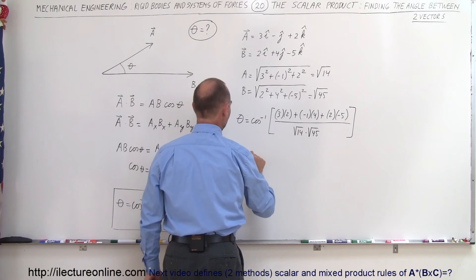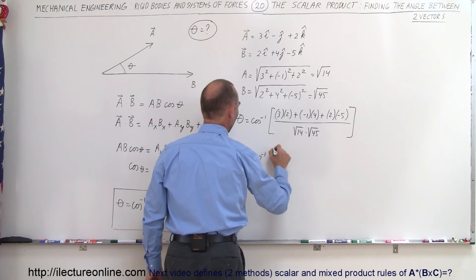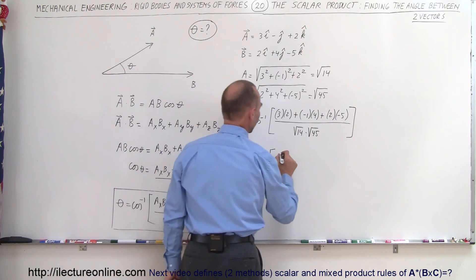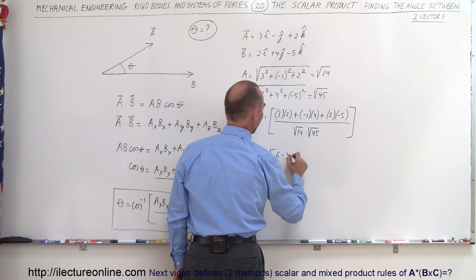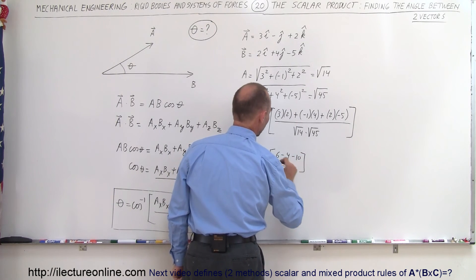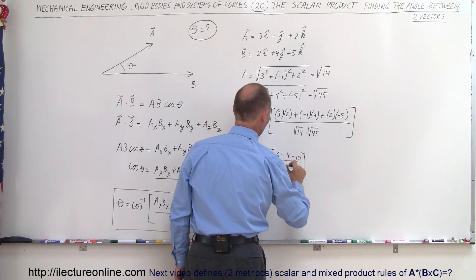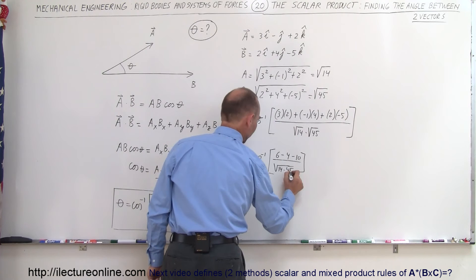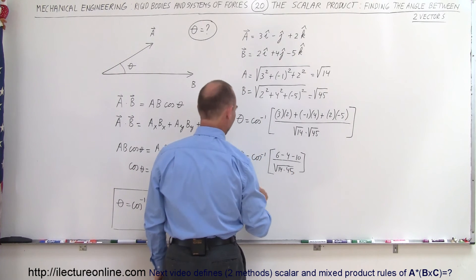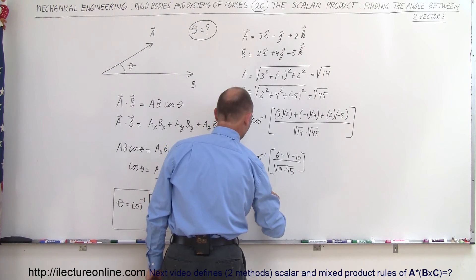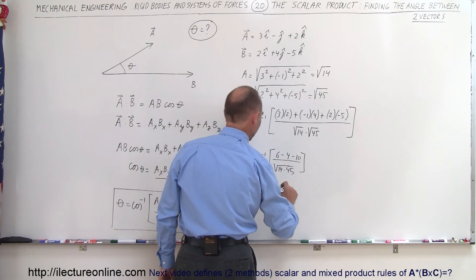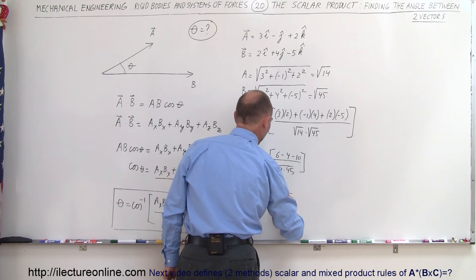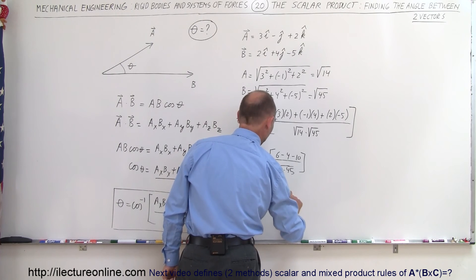So therefore, theta is equal to the inverse cosine of: 6 minus 4 minus 10, all divided by the square root of 14 times 45. That gives us the inverse cosine of minus 8 divided by the square root of 14 times 45.